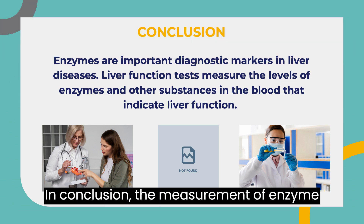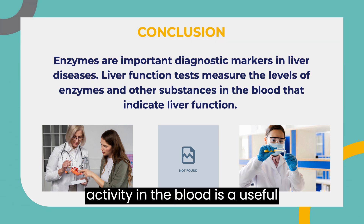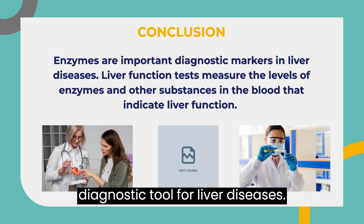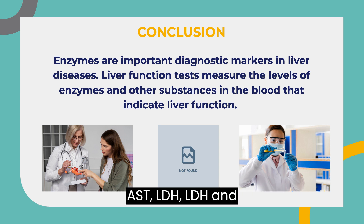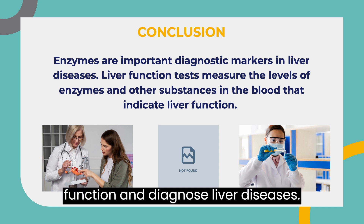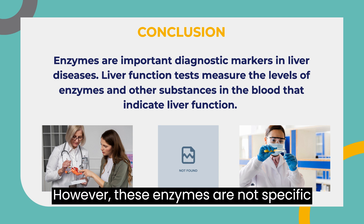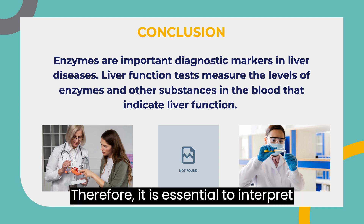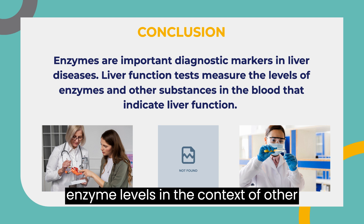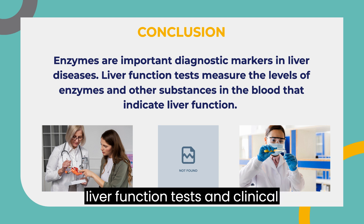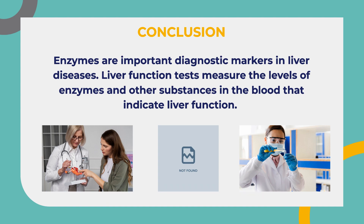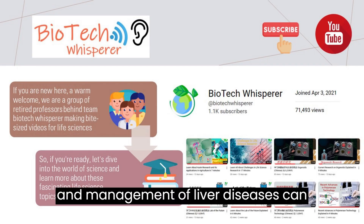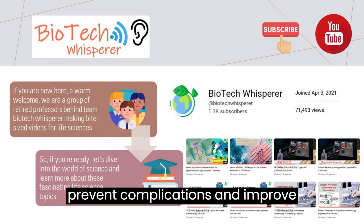In conclusion, the measurement of enzyme activity in the blood is a useful diagnostic tool for liver diseases. Enzymes such as ALT, AST, LDH, GLDH, and 5-NT are used to assess liver function and diagnose liver diseases. However, these enzymes are not specific to the liver, and their levels can be influenced by other factors. Therefore, it is essential to interpret enzyme levels in the context of other liver function tests and clinical findings. Early diagnosis and management of liver diseases can prevent complications and improve outcomes.